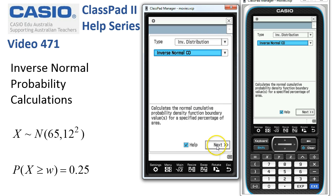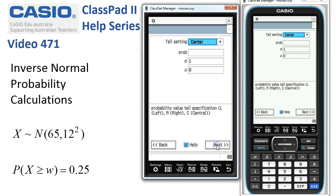Inverse normal cd, so we'll tap onto next. For this first one, our tail setting we want x is greater than some weight is 0.25, so that means we've got a right tail happening here. The required probability is 0.25.